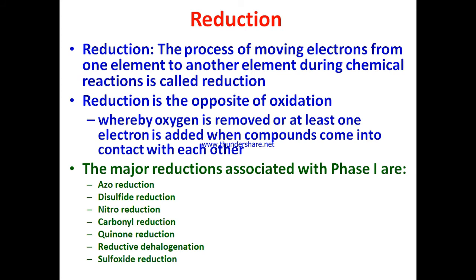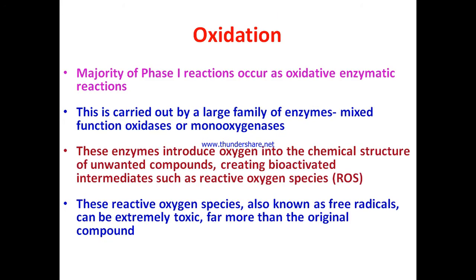Reduction is the process of moving electrons from one element to another. It is the opposite of oxidation — oxygen is removed or at least one electron is added during the chemical reaction. The major reduction reactions associated with phase one are azo reduction, disulfide reduction, nitro reduction, carbonyl reduction, quinone reduction, reductive dehalogenation, and sulfoxide reduction.